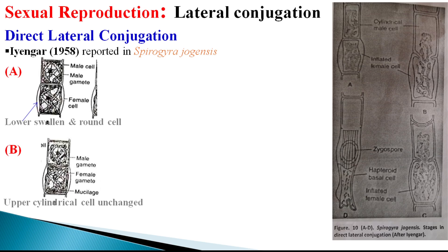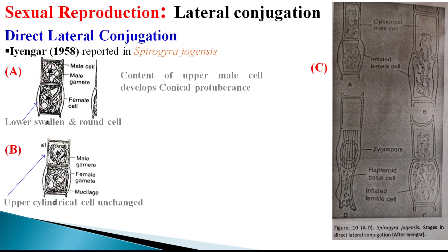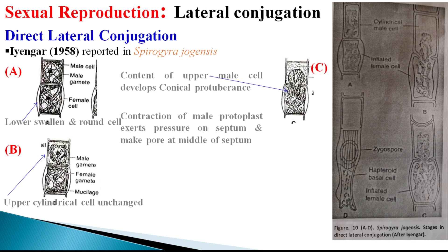A thick, highly refractive layer is secreted by the protoplast of both cells. The content of the upper male cell develops a conical protuberance on the side next to the female cell, accompanied by visible contraction of the male cell's protoplast at the opposite end. The conical protuberance contacts the separating septum, gradually elongates, and exerts increasing pressure on it.